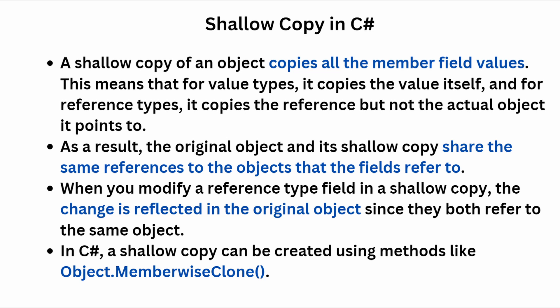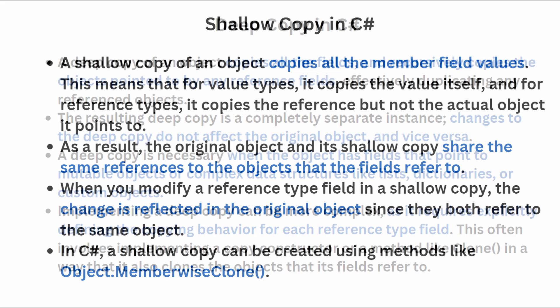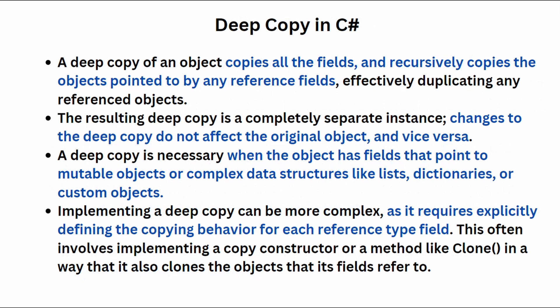A shallow copy of an object copies the immediate values of that object, regardless of whether they are value types or references to other objects. The deep copy, on the other hand, creates a new object and also recursively copies all objects referenced by the original object.